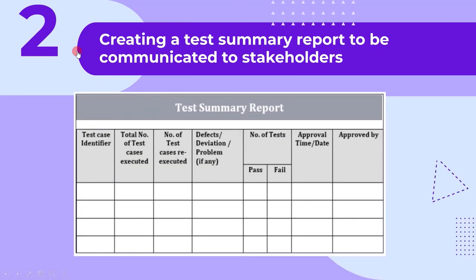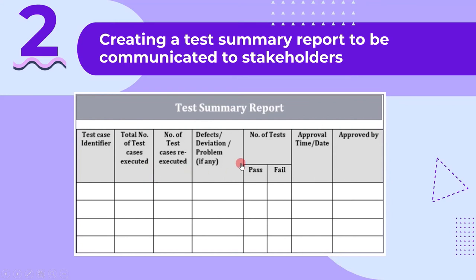The second activity is creating a test summary report to be communicated to stakeholders. Since by now all the test activities are over, we create a test summary report. A typical test summary report includes test case ID, number of tests executed, number of tests re-executed, defect ID, pass and fail status, approval date and time, and approver name. This report is then shared with the stakeholders.